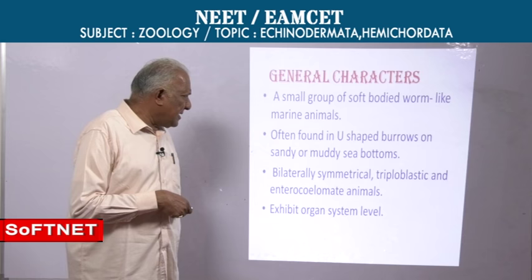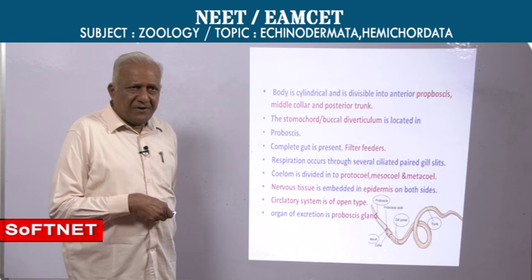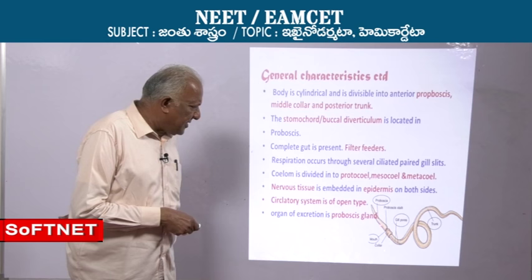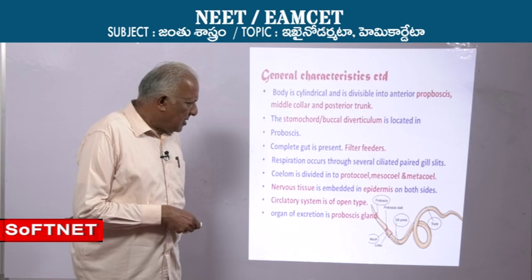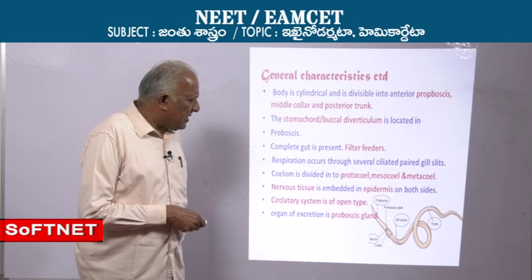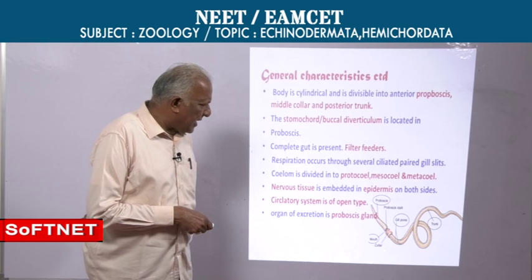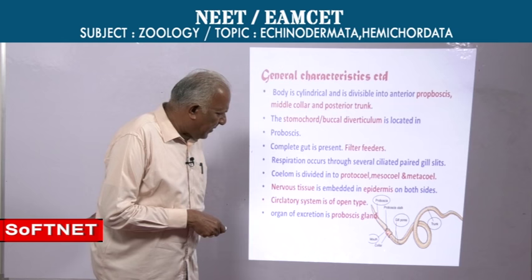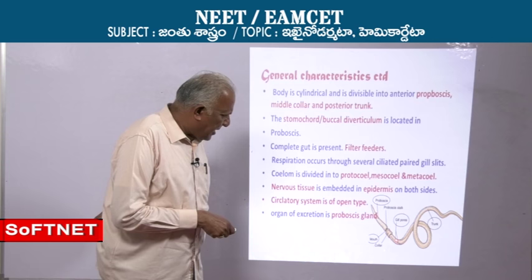They exhibit organ system level of organization. One important feature of Hemichordates: the body is divisible into an anterior proboscis, inside which you find the buccal diverticulum or stomochord. At one time it was considered the notochord, but because of its origin it is now treated as a buccal diverticulum or stomochord. Here you find the mouth at the junction of proboscis and collar. The middle region is the collar and the posterior region is the trunk.